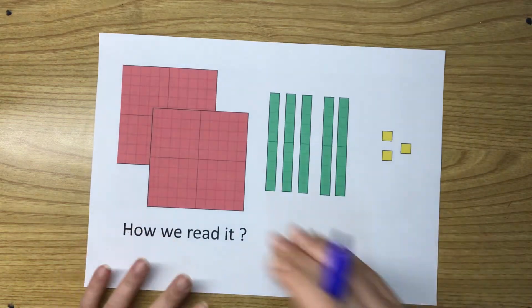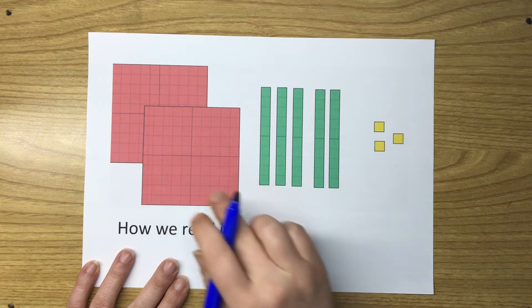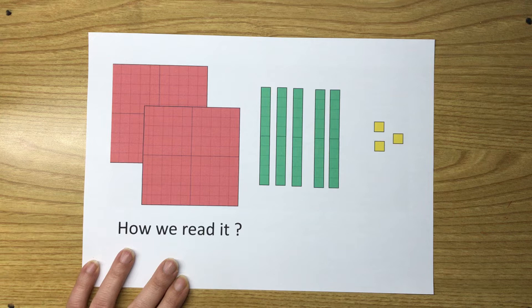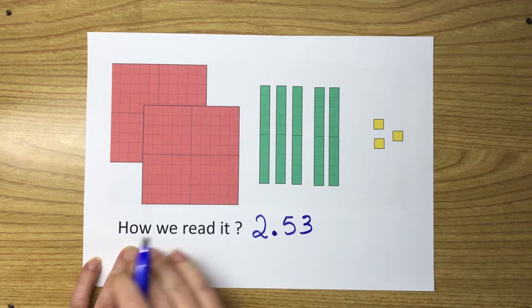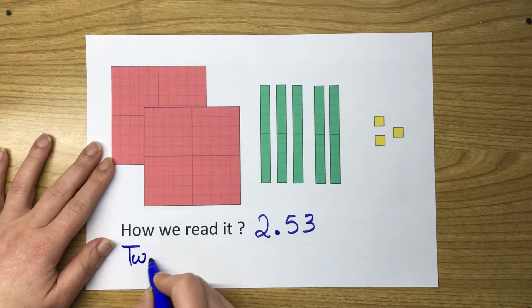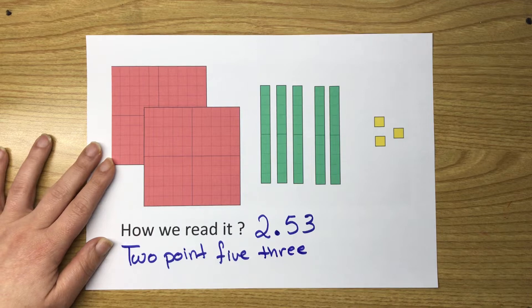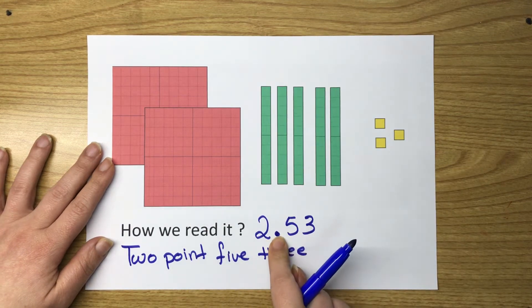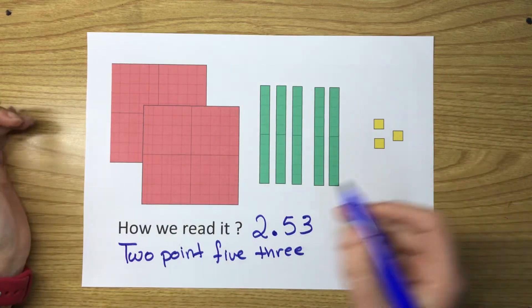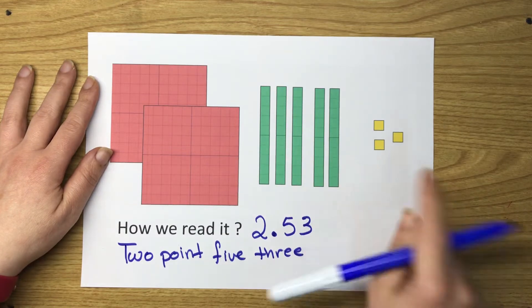This is a decimal number represented using wholes, tenths, and hundredths. How do we read it? We read it as 2.53 — two wholes, five tenths, and three hundredths. We read it as two point five three. The decimal point is used to divide the whole parts from the small parts — to separate the whole digits from the tenths and hundredths.